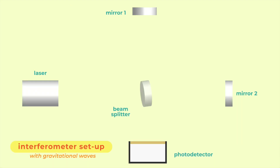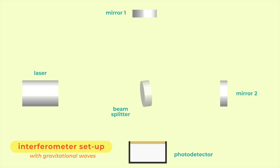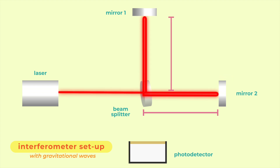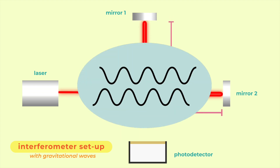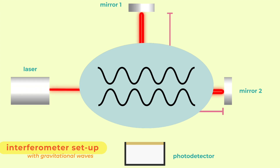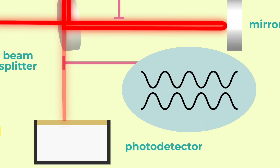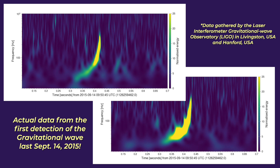But with gravitational waves, the compression and expansion in spacetime allows the arm's distances to change, altering the beam's distances and its resulting light waves. The changes in alignment lead to varying light intensities, which signal the gravitational wave.